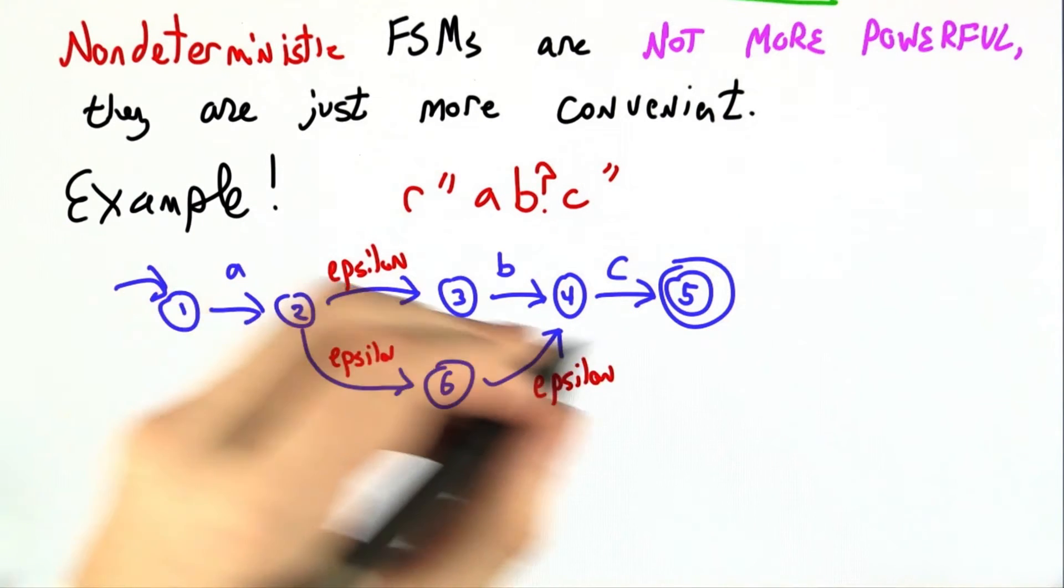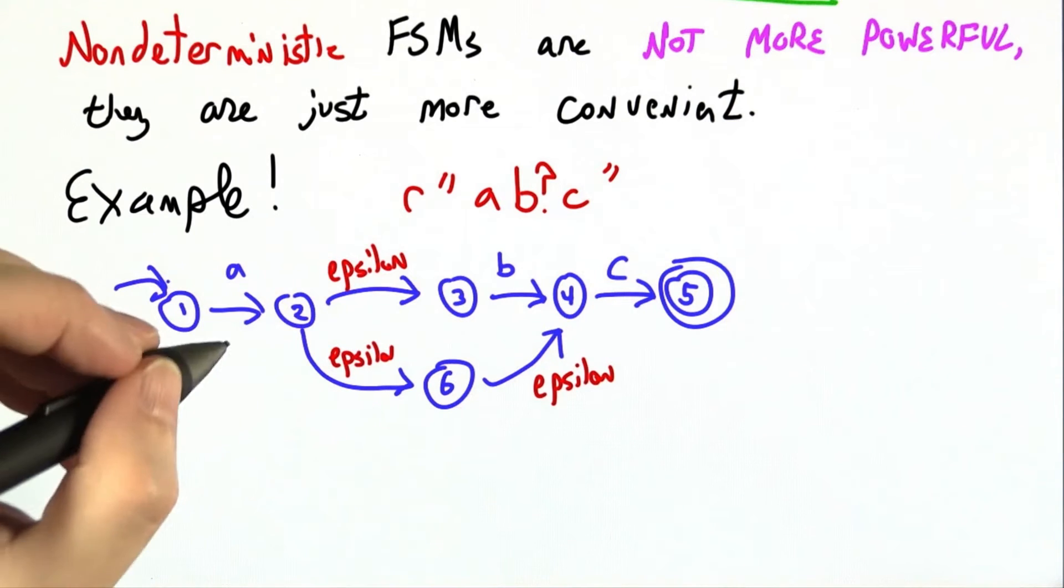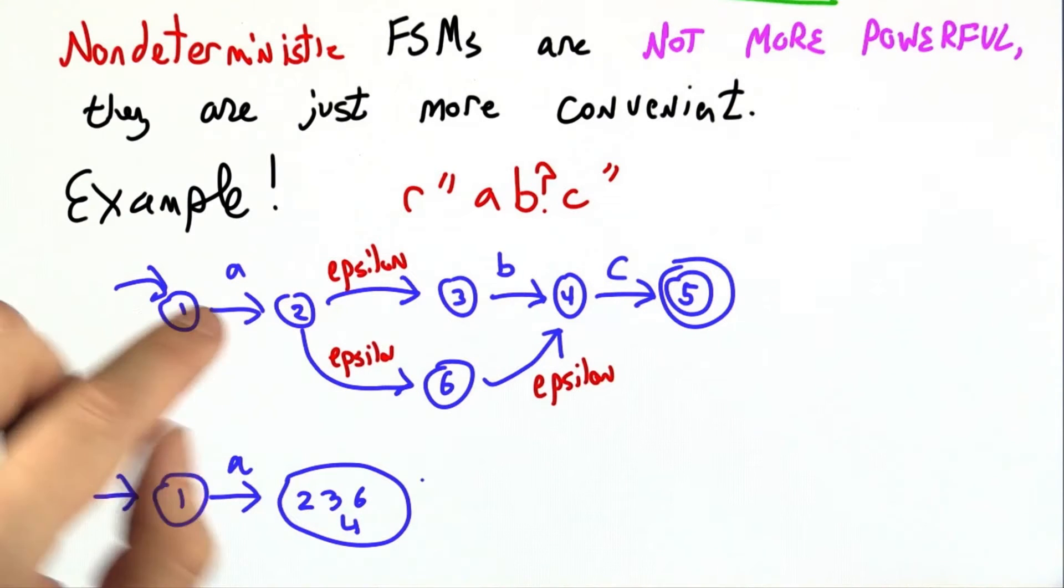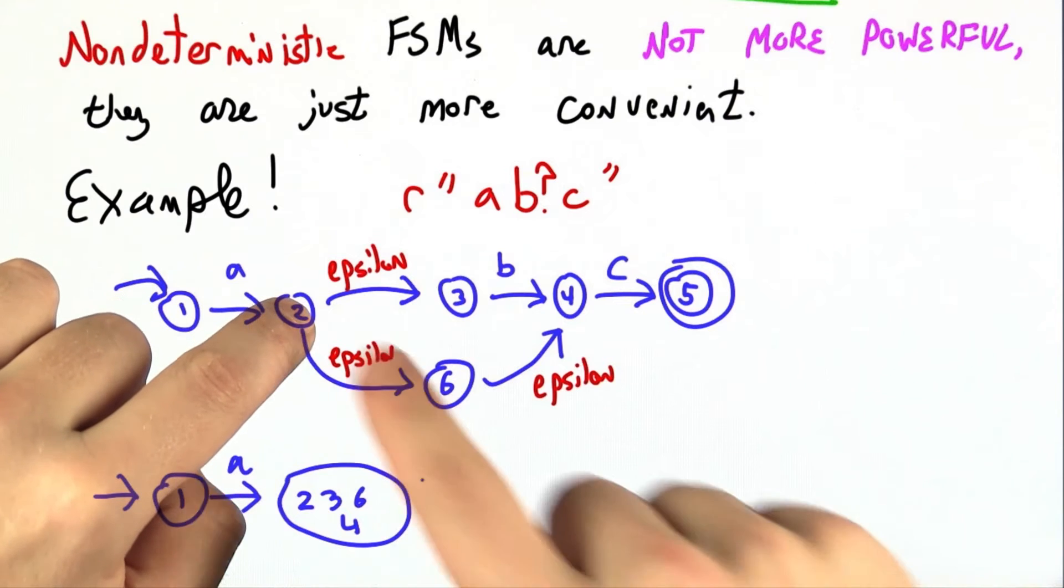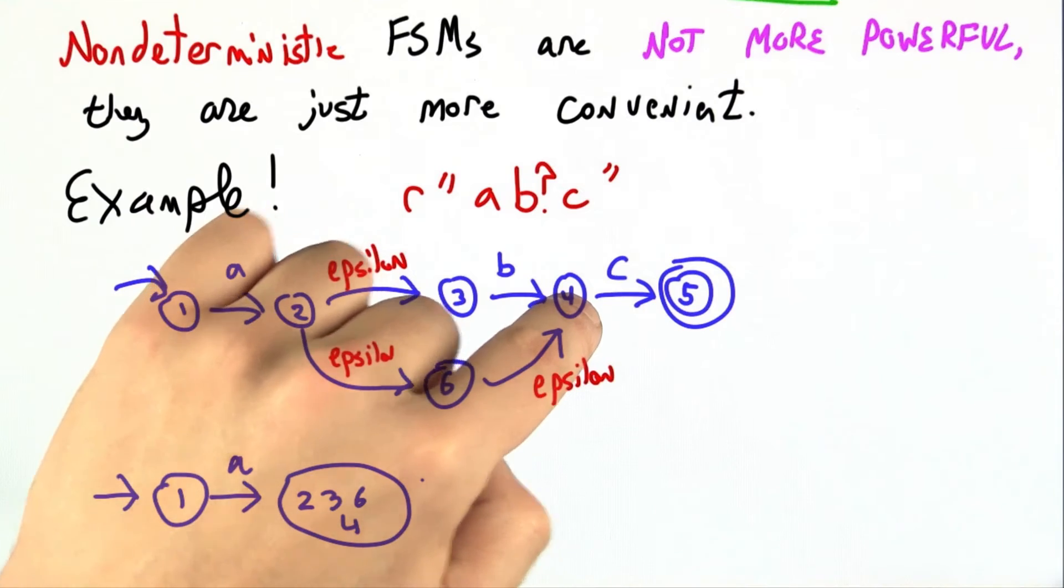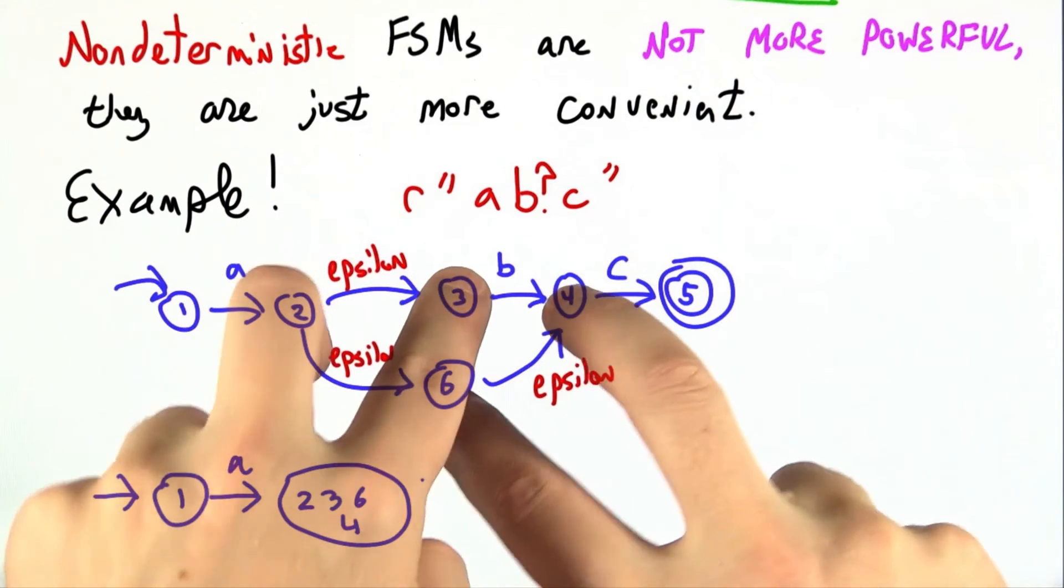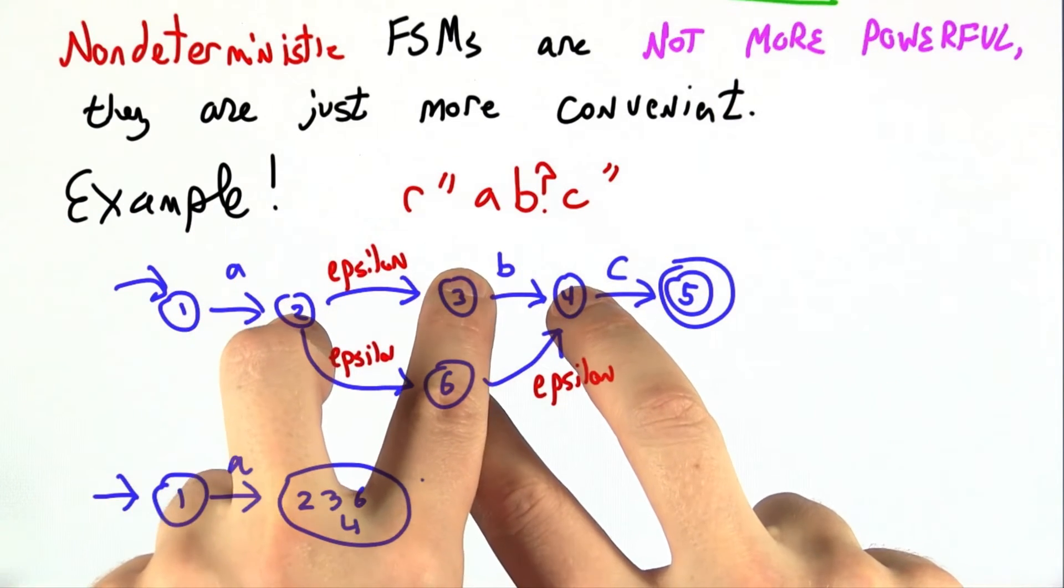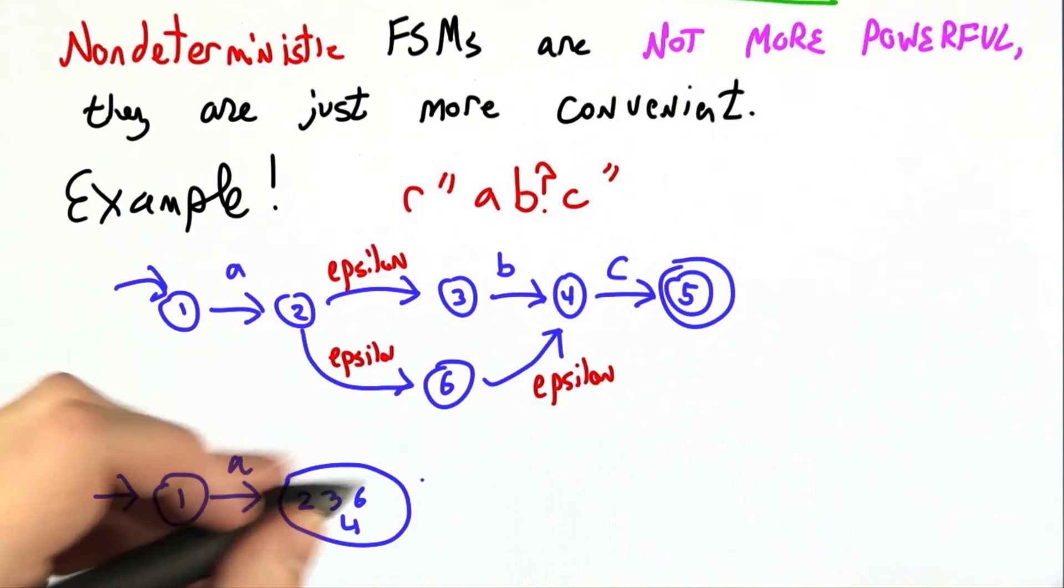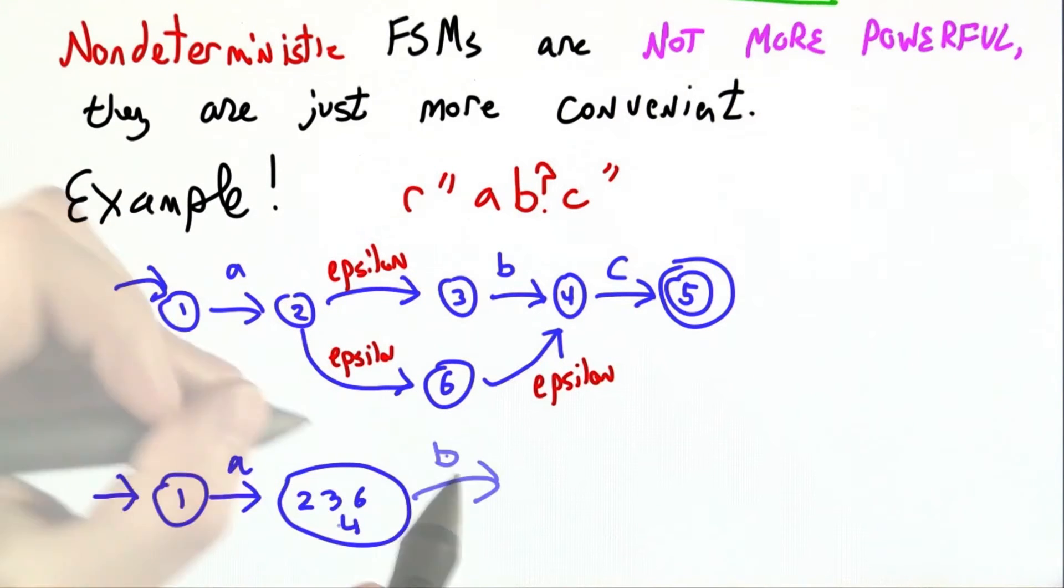I'm now going to write a deterministic finite state machine that does exactly the same thing. And I'm going to hint at how this conversion works. We'll see this again in just a minute. After I see an a, I could be in 2, or I could take the epsilon to 3. I could have taken the epsilon down here to 6, or all the way over to 4. So there are 4 places I could be in. That's a lot of fingers. I'll just record all of them as the name for my new state, 2, 3, 6, 4.